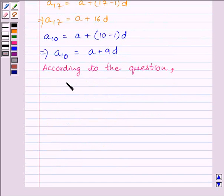According to the question, the 17th term minus the 10th term equals 7. We know the 17th term is equal to A plus 16D. So we can write A plus 16D minus the 10th term, which is A plus 9D, equals 7.